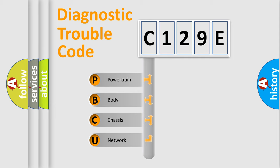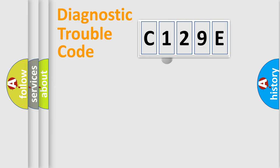We divide the electric system of automobile into four basic units: powertrain, body, chassis, and network. This distribution is defined in the first character code.